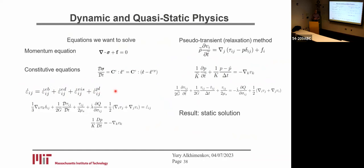I use the same numerical method as before. What's most important: on the left you can see the equations I would like to solve, but on the right you can see equations which I actually solve. This is a quasi-static equation, and I use a relaxation method by adding a pseudo-time derivative into the right-hand side, with a certain attenuation parameter, and wait until this derivative attenuates to reach the quasi-static solution.